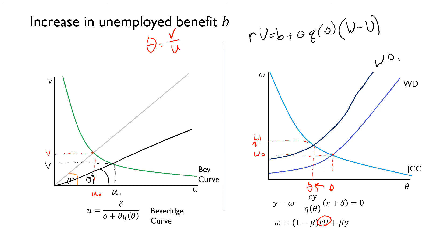So these are the two different types of comparative statics that we can look at. We can consider other policy variables like the cost of posting a vacancy. How does that look, and our